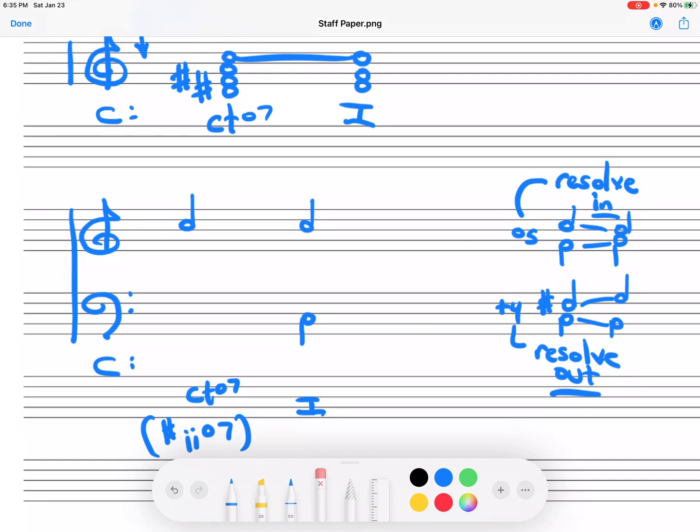Now, notice, when you are resolving to one, the spelling of this chord is normally sharp two, fully diminished seven. But we write CT diminished seven. If I put the sharp two here, it might be a little bit better. Now, you will see many enharmonic spellings when you're working with fully diminished seventh chords.